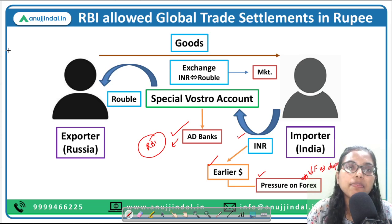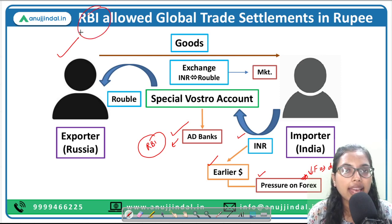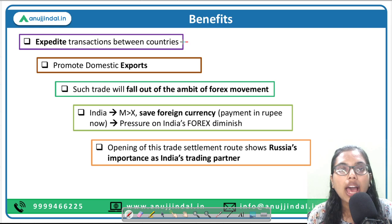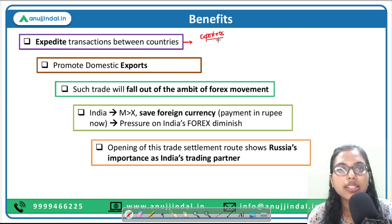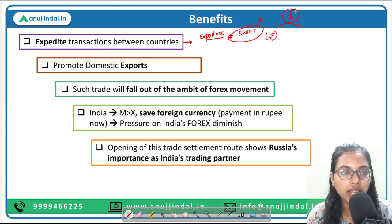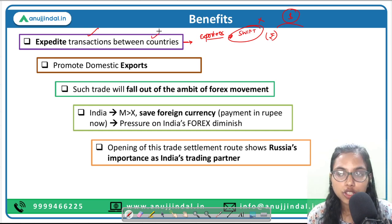Now let us study the benefits of RBI's rupee settlement initiative. First, it will expedite transactions between countries. After the Russia-Ukraine war, Indian exporters faced pain points in getting back their money because Russia was removed from the SWIFT payment gateway. With this new arrangement, exporters receive money in rupees directly with no role for dollars, increasing both the volume and speed of settlement of transactions between such countries.